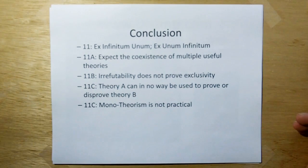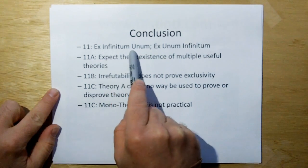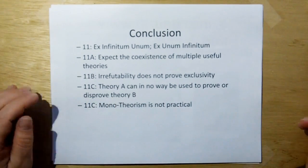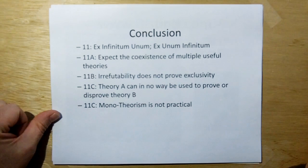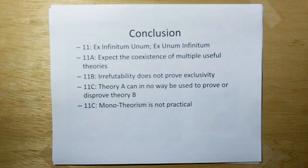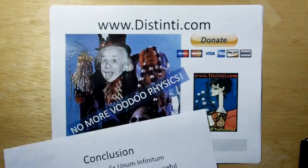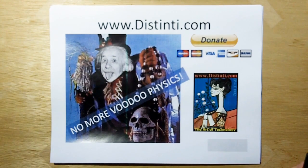So just to reiterate we have rule of acquisition 11 ex infinitum unum ex unum infinitum from infinity one from one infinity that's what a duality is. 11A expect the coexistence of multiple useful theories right up until the very end. 11B irrefutability does not prove exclusivity. 11C theory A in no way can be used to prove or disprove theory B. And this should be 11D monotheorism is not practical. Thank you very much no more voodoo physics and I hope to get some more videos out in two weeks we'll see I've got so much going on especially with cold weather work etc. Take care bye bye.